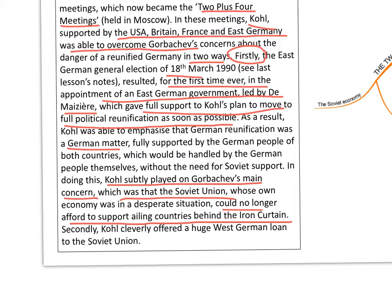Secondly, Kohl very cleverly offered a huge West German loan to the Soviet Union, which effectively sealed the deal. If there were any doubts left in Gorbachev's mind, when Kohl followed through and said 'we will give you a huge loan to help you sort out your own problems,' that resolved any remaining doubts.